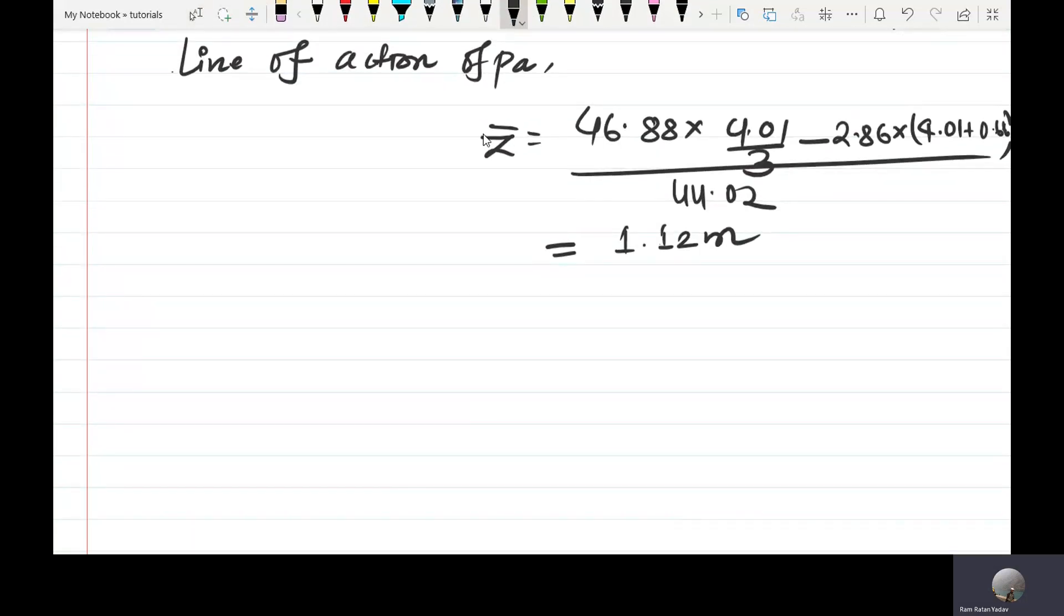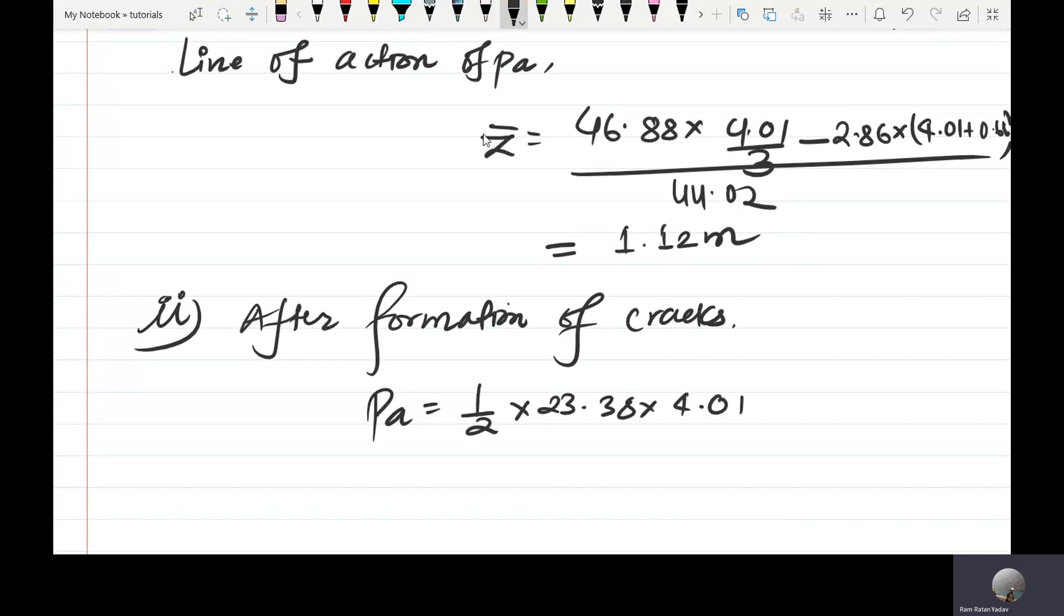For P2, half times 23.83 times equals 46.88 kilonewton per meter, and it will act at a height of 4.01 by 3 meter above base.